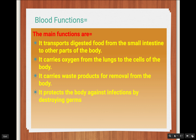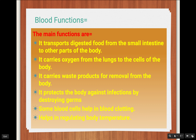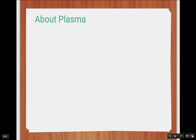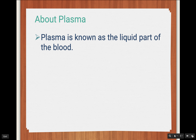Blood also protects the body against bad infections and helps to destroy germs and bad bacteria present in our body. Some blood cells also help in blood clotting, which prevents the loss of blood from our body. Blood also helps in regulating the body temperature — many people have high or low temperature, but blood helps us keep the body temperature correct so we don't get fever.